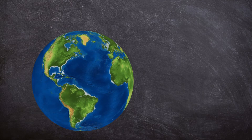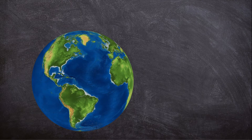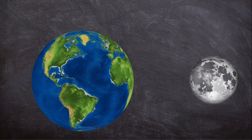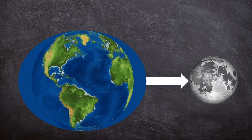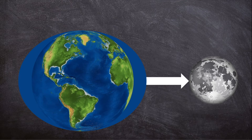As the Earth rotates, the side of the Earth that is facing the moon will experience a high tide. This happens because the moon's gravity is pulling the water on Earth towards it. The opposite side of the Earth will also experience a high tide. Six hours later, these areas will not be in line with the moon and they will experience low tide.